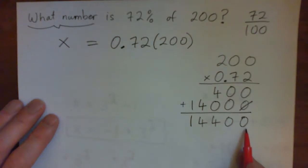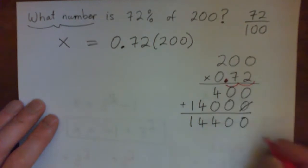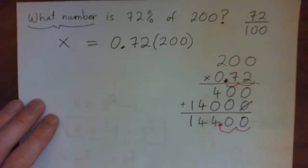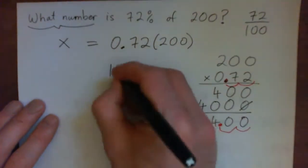This is not the answer because we have to deal with the decimals. There are two decimal places in the multiplication, so there must be 1, 2 in the answer. So it's 144.00 or just 144.